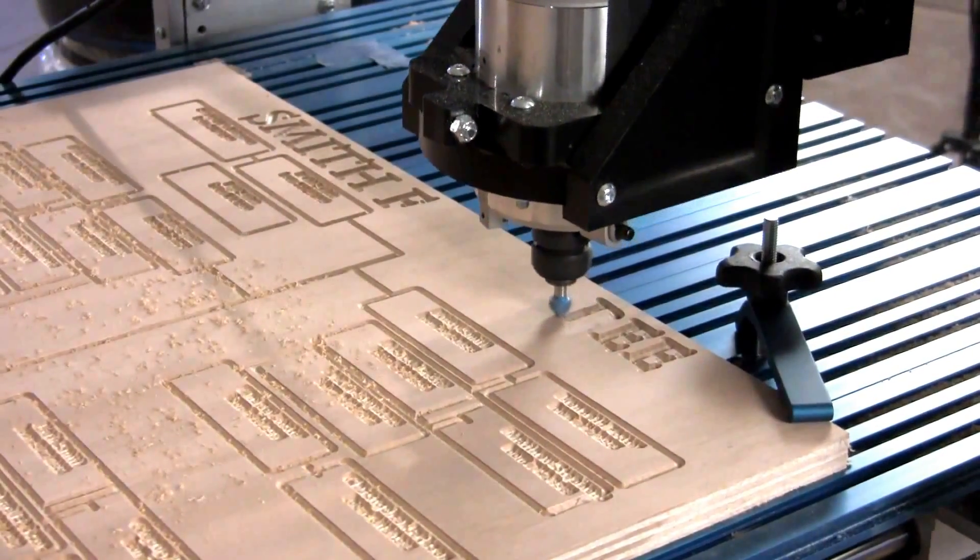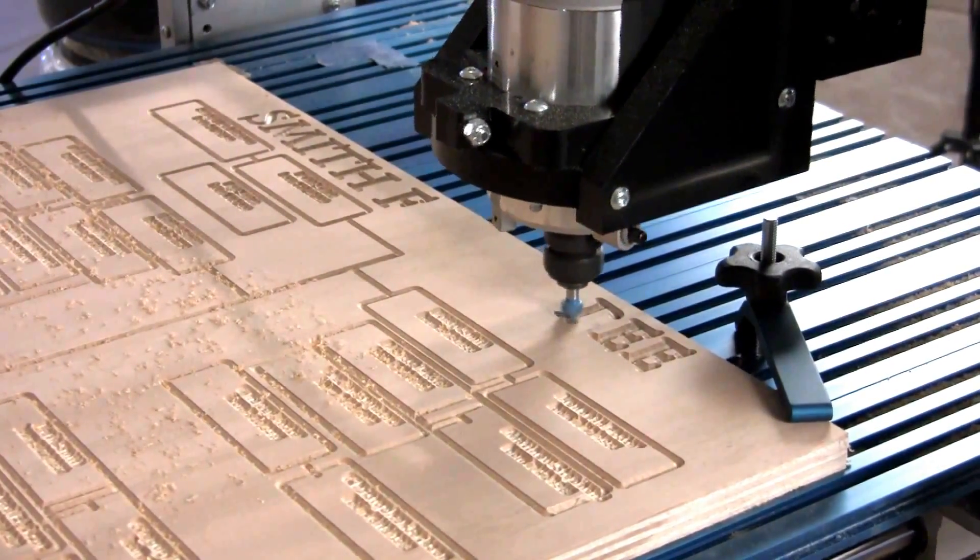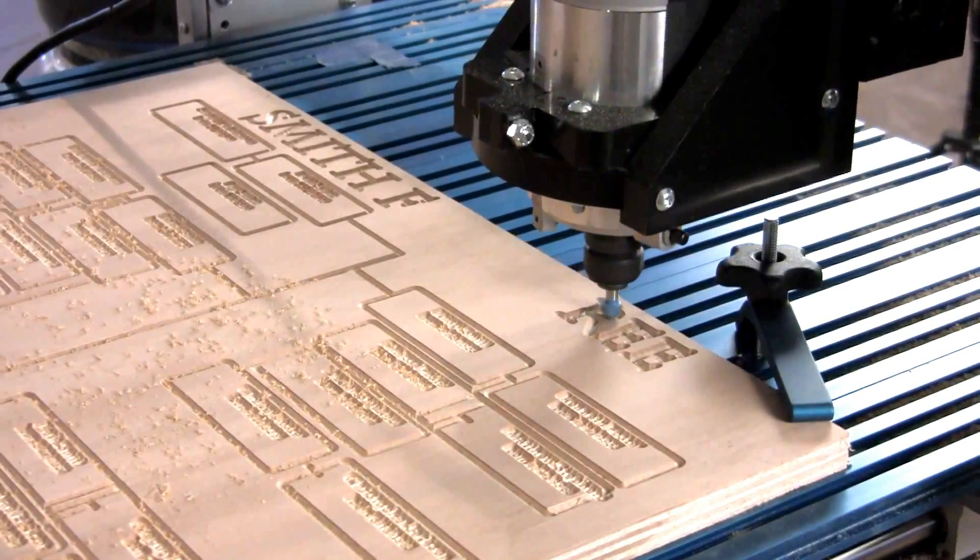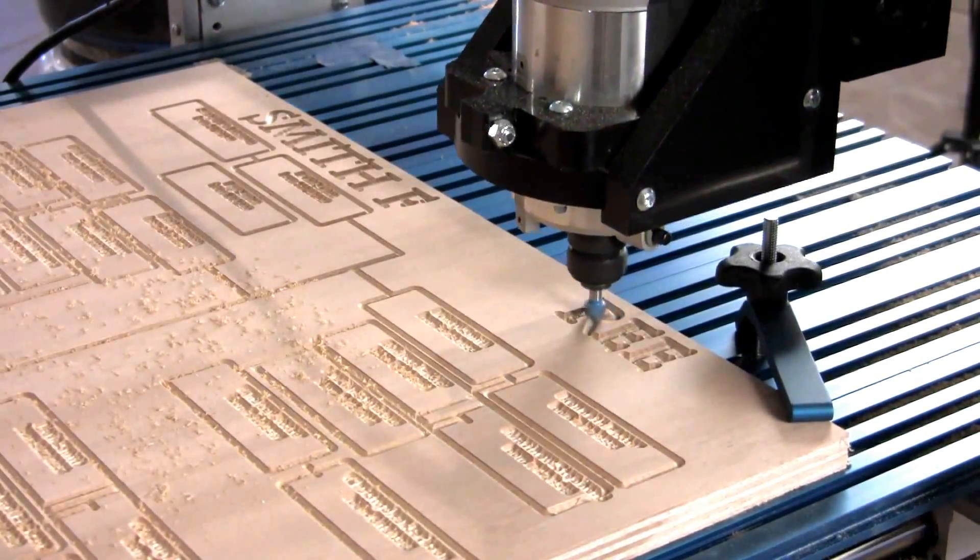Use MDF or some other kind of scrap wood, test the cuts, make sure it runs from beginning to end of the program without flaw. Then you're ready to start with your heirloom quality material.